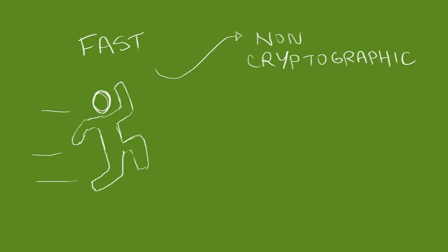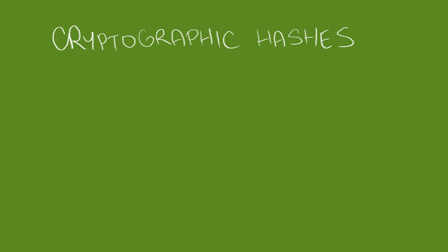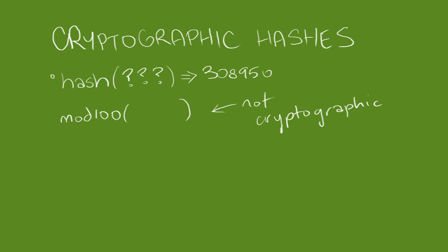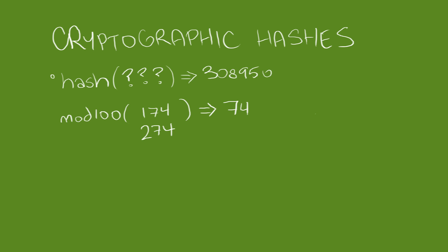Cryptographic hashes have a number of properties that are absolutely necessary for security purposes. Given an output, you can't guess an input that will generate that output. So the mod100 function is not cryptographic — if you wanted to target 74, it would be easy to guess a value that would produce 74, 174, 274. This is called pre-image resistance. Given an input and output, you can't find a nearby input with the same output. This is called second pre-image resistance.